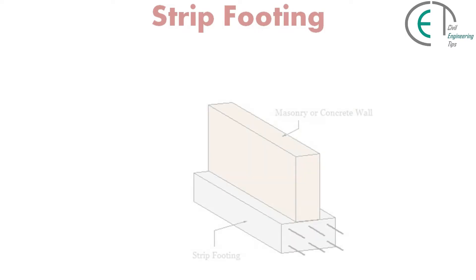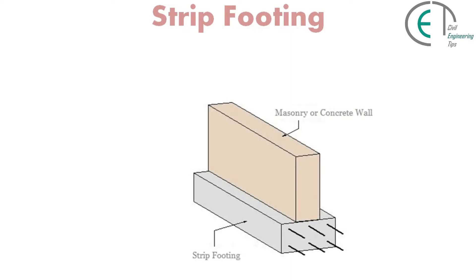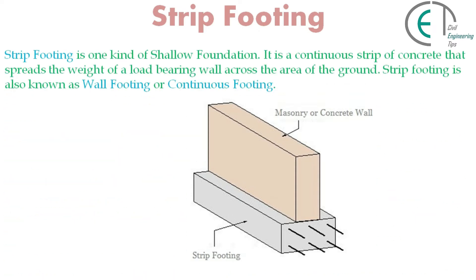Hello everyone, I am Shine and you are watching the Civil Engineering Tips channel. In this video we are going to discuss another shallow foundation — strip footing. Strip footing is one kind of shallow foundation. It is a continuous strip of concrete that spreads the weight of a load-bearing wall across the area of the ground. Strip footing is also known as wall footing or continuous footing.